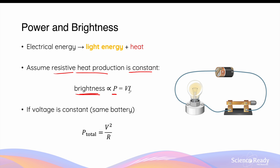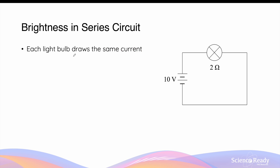Electric power is equal to the voltage multiplied by the current passing through the light bulb. When the voltage supplied to the circuit is kept constant, the total power of the circuit will be given by the voltage squared divided by R. We derive this equation using Ohm's law. When connected in series, each light bulb will draw the same amount of current due to Kirchhoff's current law. Let's say we have a circuit containing a light bulb with a resistance of 2 ohms, supplied by a battery with a 10-volt voltage.